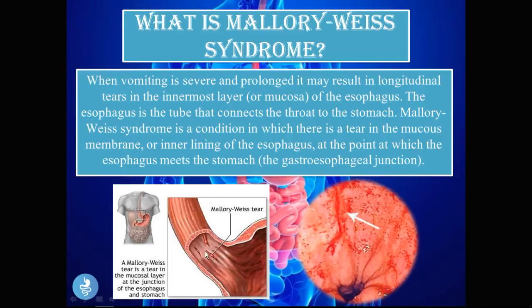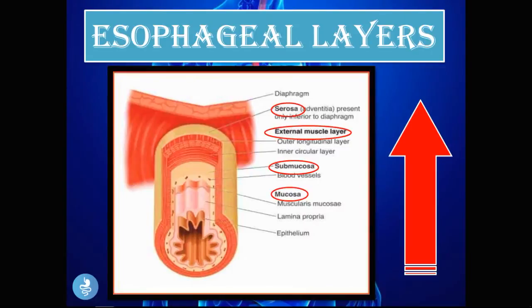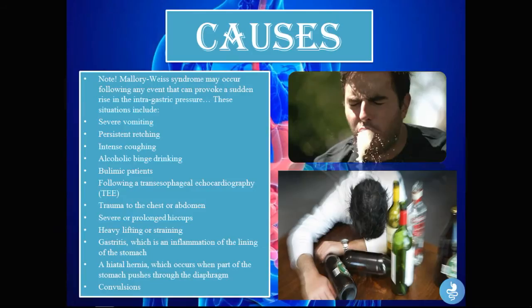These tears are usually longitudinal and affect only the innermost layer, the mucosa. Here is what it looks like on endoscopy — you can see this longitudinal tear in the mucosa. The layers of the esophagus from innermost to outermost are: the mucosa, the submucosa, the external muscle layer, and the serosa. Mallory-Weiss syndrome mostly affects the mucosa, and in very severe cases, the submucosa.